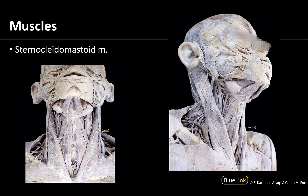Next let's identify the sternocleidomastoid muscle, often abbreviated SCM, which we will refer to throughout the course. The name tells you a lot about the attachments of this muscle. The sterno portion means its attachment to the sternum, specifically the manubrium, which you can see down in this region.